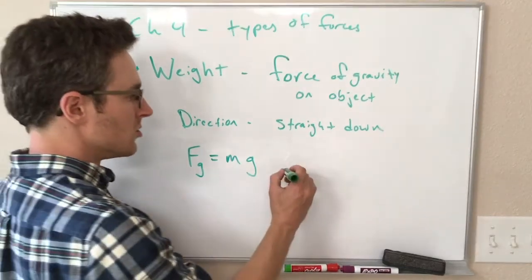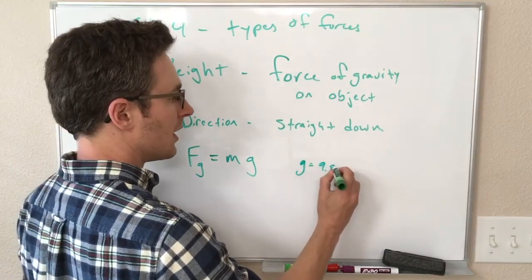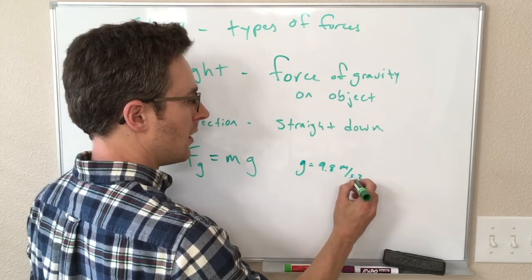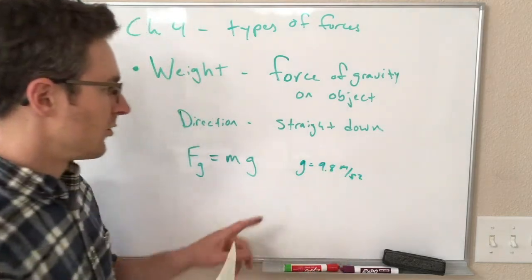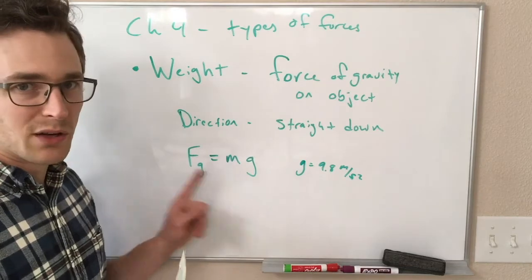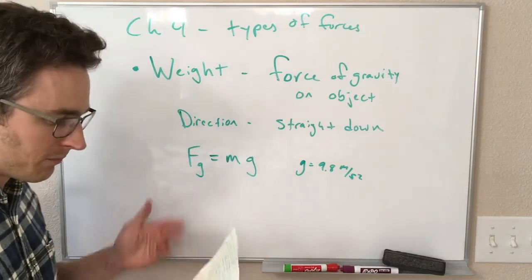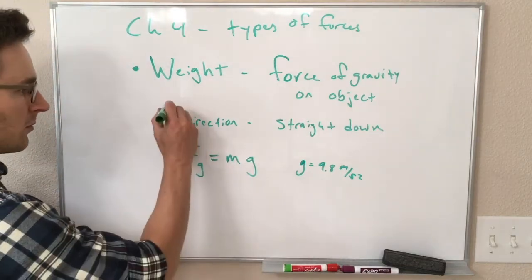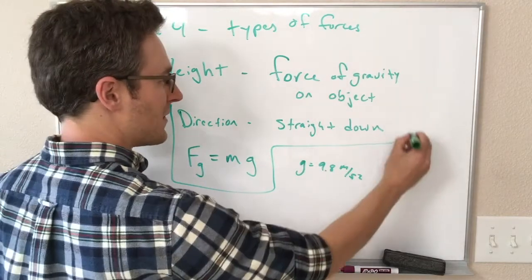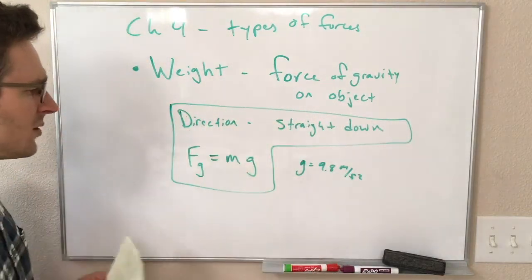Some books use W for weight, I like F sub G just because it reminds you that this is a force like any other. So the size of this force is equal to M, the mass of the object, times G, the acceleration of gravity on the surface. G is 9.8 meters per second squared. And we already know when we multiply an acceleration by a mass, we get a force.